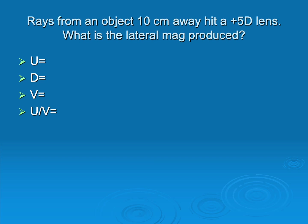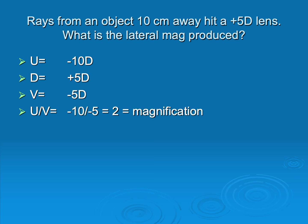Let's put some numbers to this. If rays come from an object 10 centimeters away hitting a plus 5 lens, what is the lateral mag? We use U over V. Since 10 centimeters away, 100 divided by 10 is 10, it's minus because rays are diverging, and the lens is plus 5. We calculate V, then U over V. The answer is 2, meaning the image is 2 times bigger than the object. Any result greater than 1 means magnification.